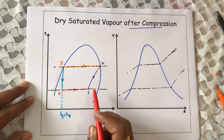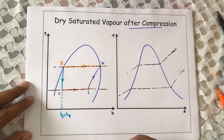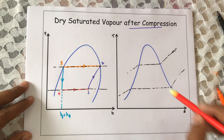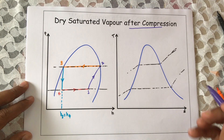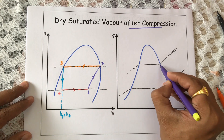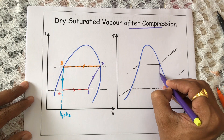And finally, process 4 to 1 is constant pressure heat addition, which is the process in which we get the refrigeration effect. Now the same cycle we have to prepare on the T-H chart. Process 1 to 2 is isentropic.